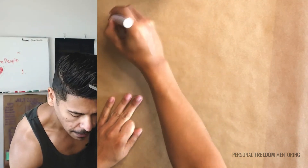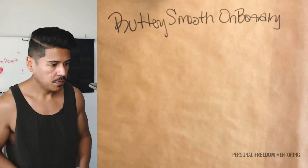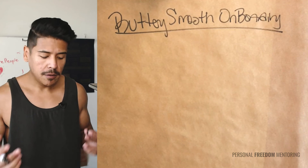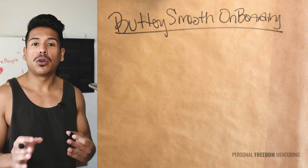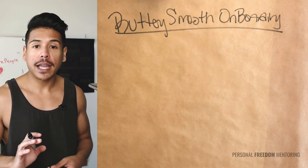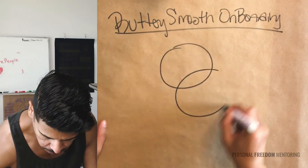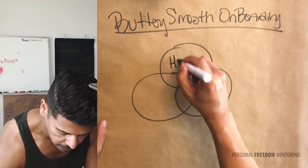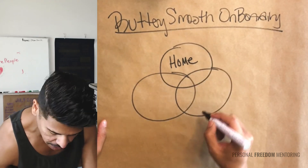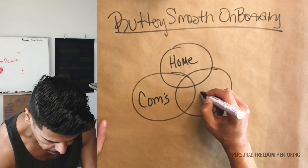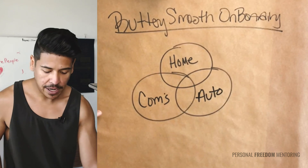So when it comes to buttery smooth onboarding, there are three main parts when it comes to building a program that works super smooth — for you as the coach or online course creator, and for actually getting your clients results. The first part is all about home base. The second is about the communication lines, the comms. And the last one is all about the automation that it takes to bring it to life.